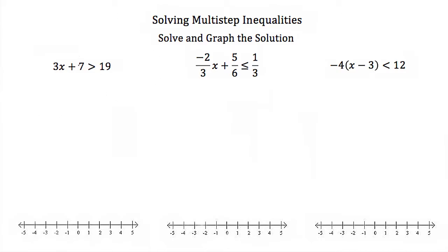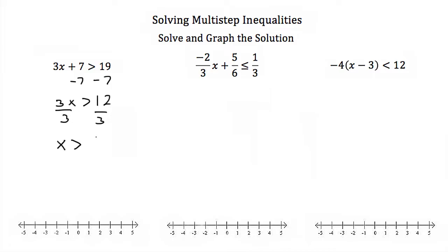We have 3x plus 7 has to be greater than 19. The first step to solve this for x, I'm going to subtract 7 from both sides. If we do that, we'll get 3x has to be greater than 12. Our next step will be to divide both sides by 3, and we'll end up with x has to be greater than 4.